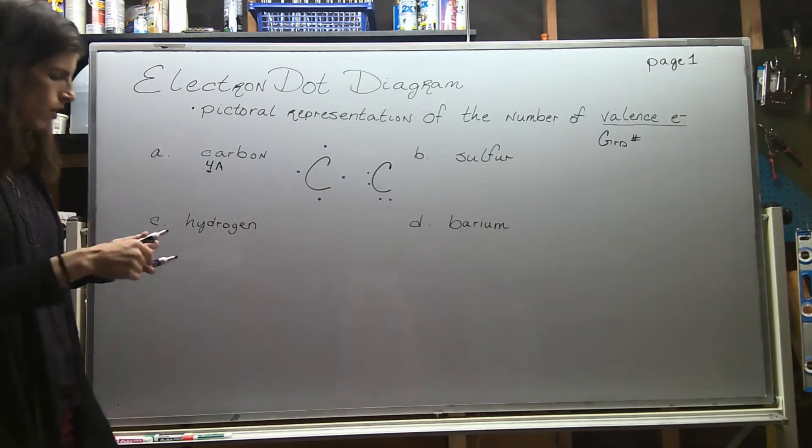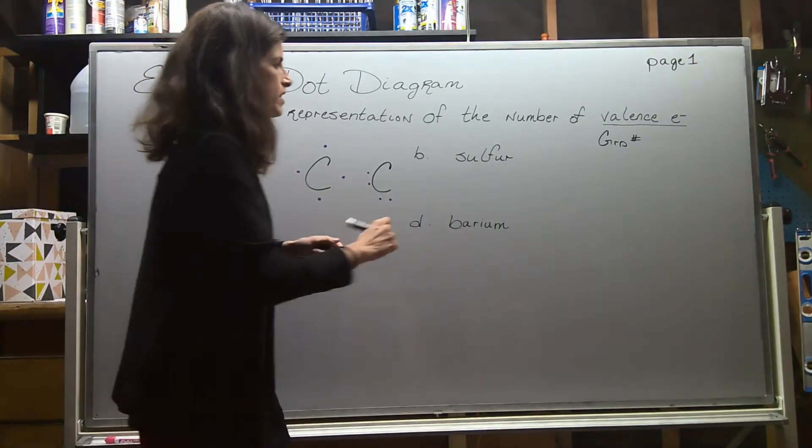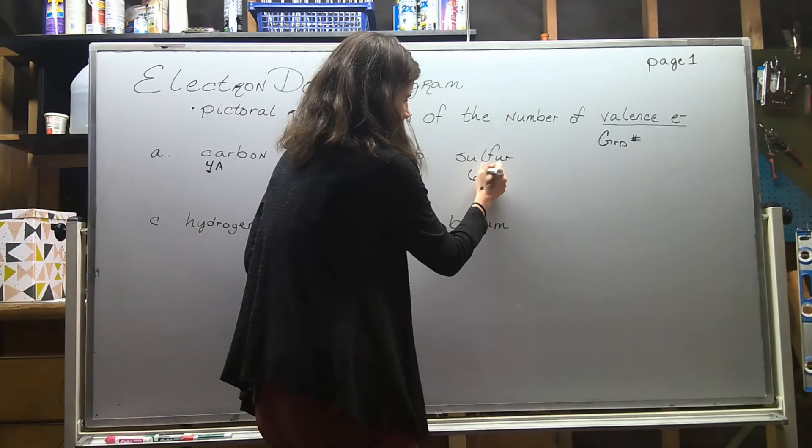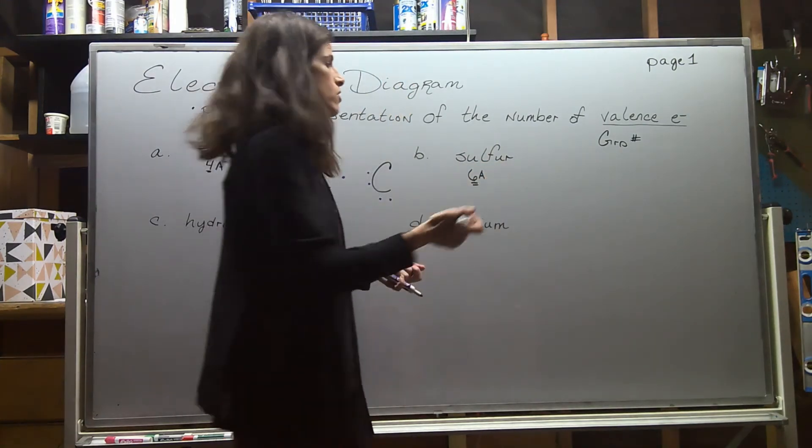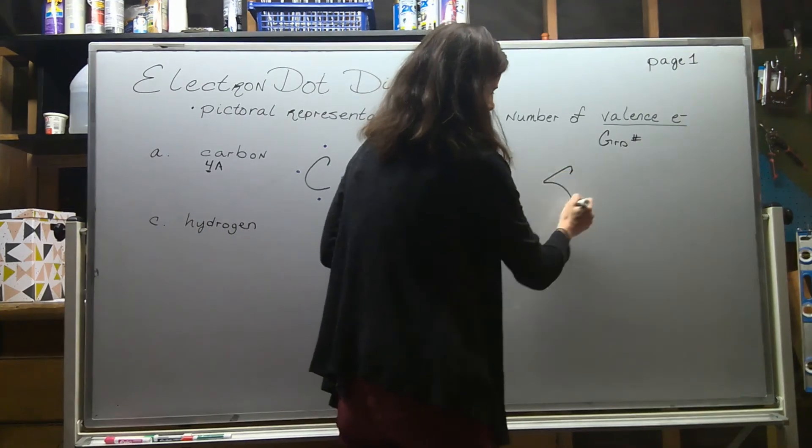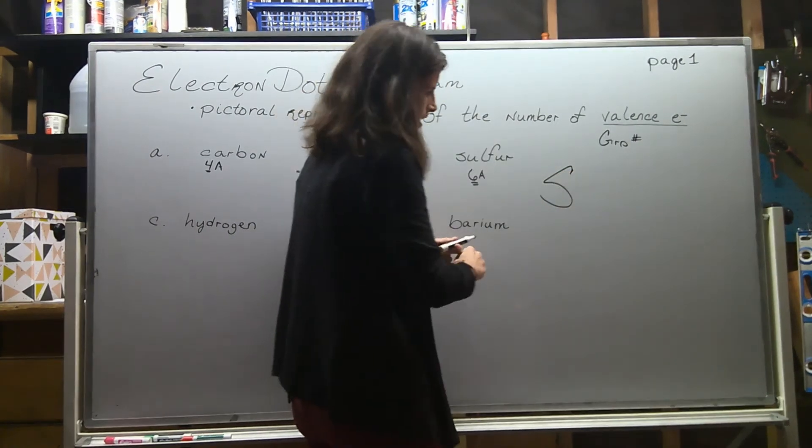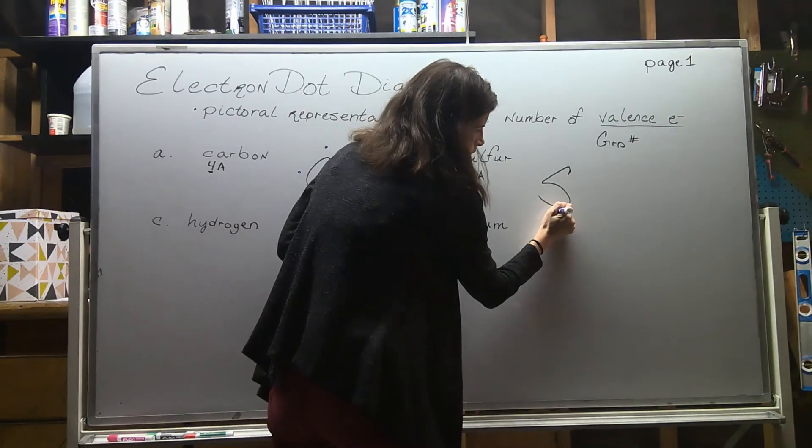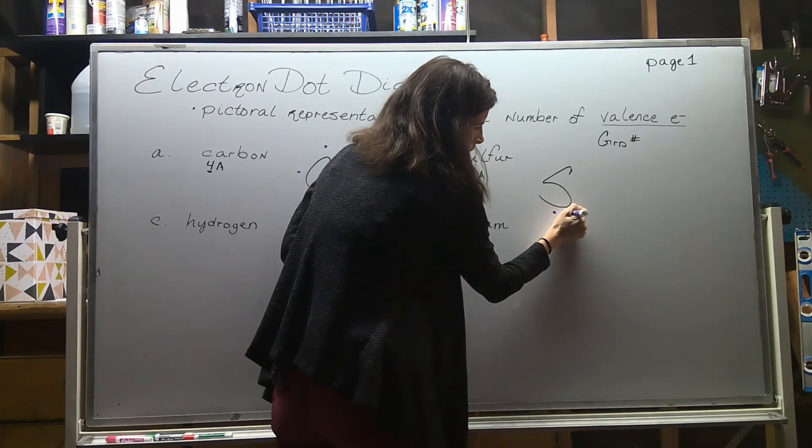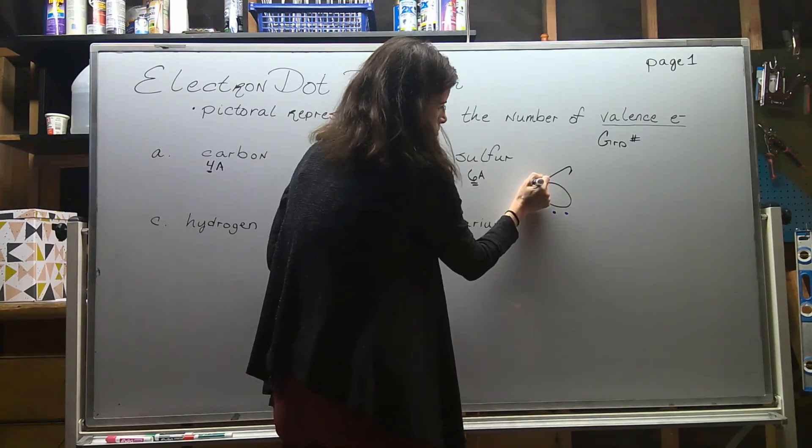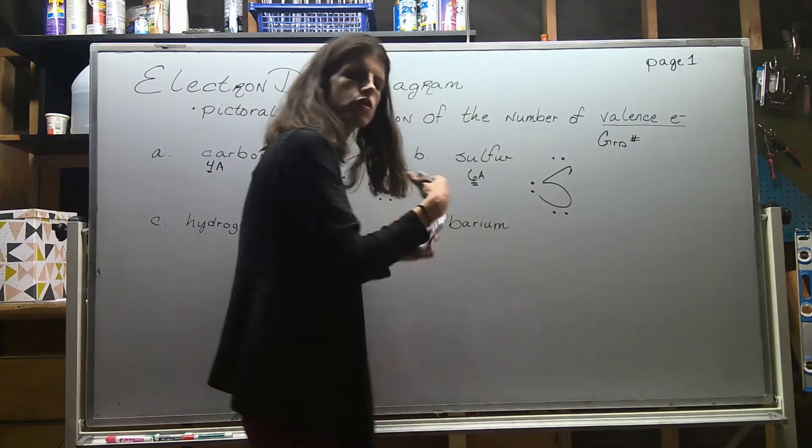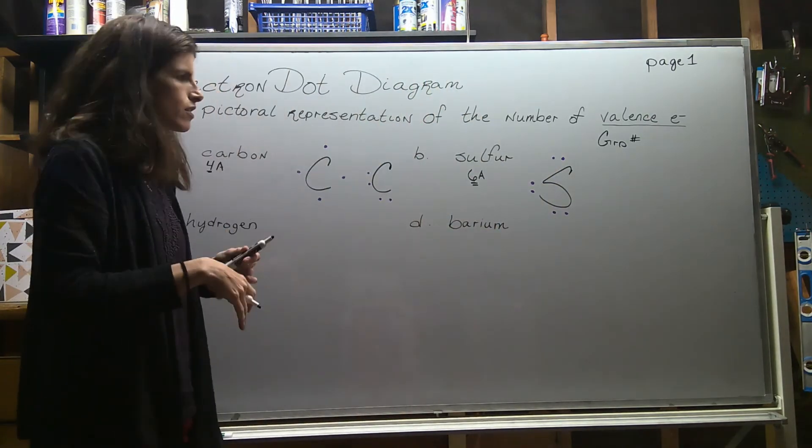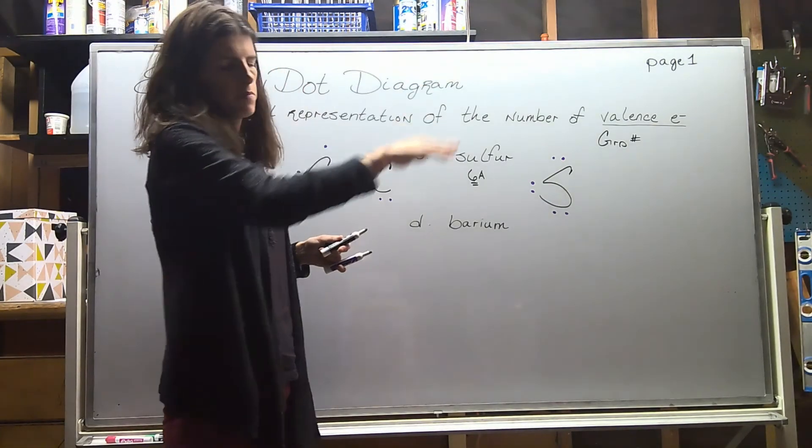Let's do sulfur. Sulfur is in group 6A, so that means it has six valence electrons. We'll put the S and now we need to put six of those electrons. Electrons are going to be represented by these little dots, so two, four, six. Again, if you spread them out a little bit differently that's fine, as long as you're keeping them around and you're not putting like all six on the same side - that'd be incorrect.